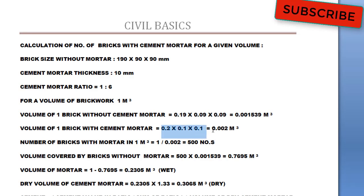These values I'm writing here. So we are getting volume of one brick with cement mortar 0.002 cubic meter. Now, number of bricks with mortar in one cubic meter equals 1 divided by 0.002 cubic meter. Divide given value by volume of single brick with cement mortar. So we are getting 500 numbers. 500 number of bricks are required.